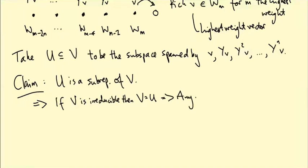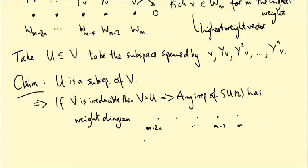In other words, any irreducible representation of SU2 has a weight diagram that just looks like a string of dots spaced out in twos, like so. So it starts at some weight M, and then M minus 2, down to M minus 2N for some N. And each of these weight spaces is one-dimensional because it's spanned by V, Y V, up to Y to the N V. So all weight spaces are one-dimensional complex vector spaces.